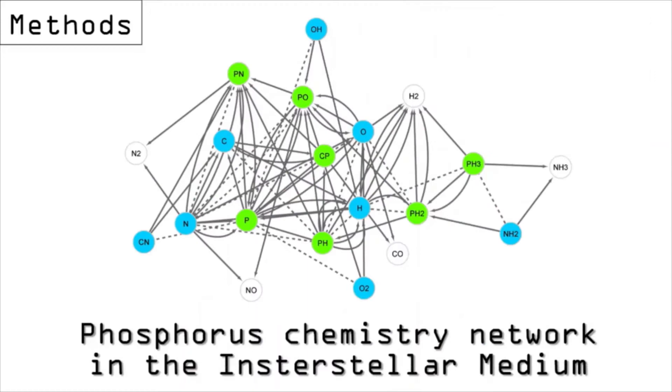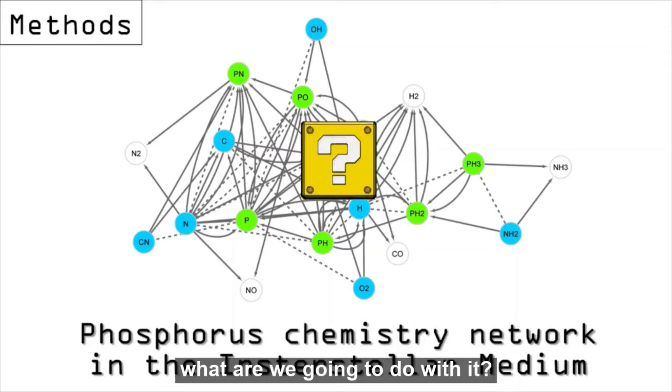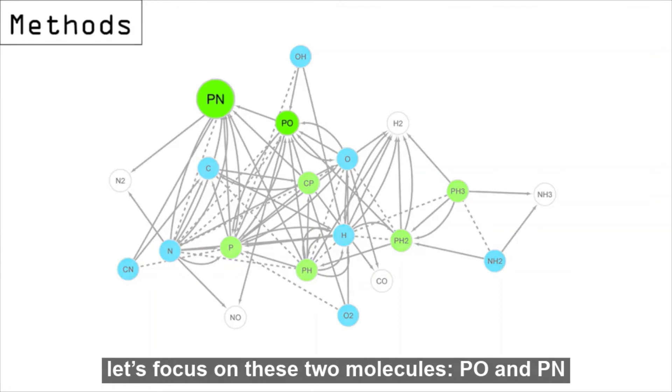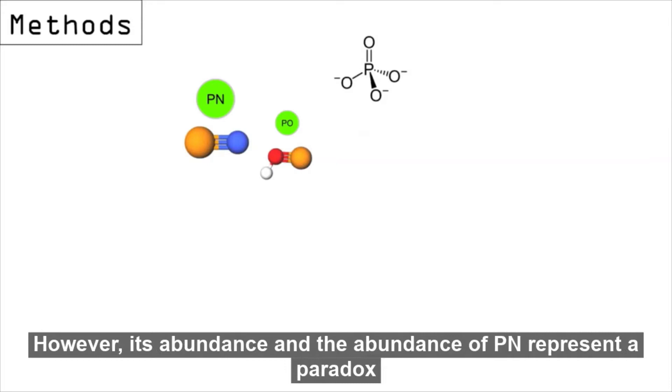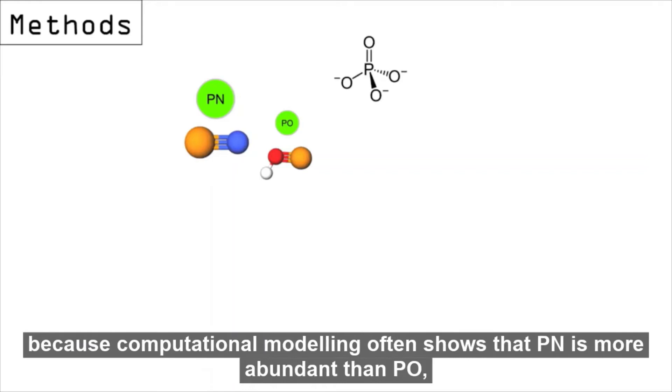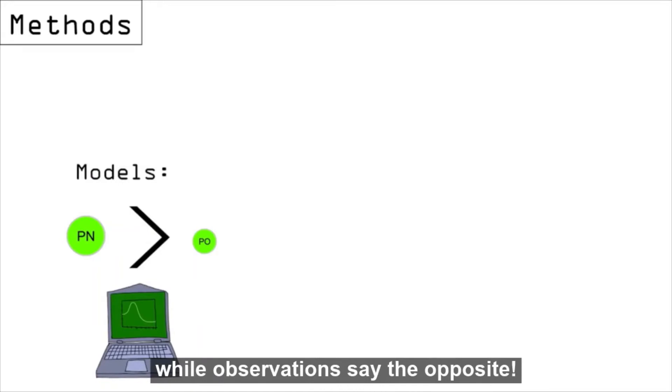But you might be wondering, okay, but what are we going to do with it? To answer this question, let's focus on these two molecules, PO and PN. PO is a very important molecule for our purpose, because its bond is also present in the phosphates and is considered a prebiotic molecule. However, its abundance and the abundance of PN represent a paradox, because computational modeling often shows that PN is more abundant than PO, while observations say the opposite.